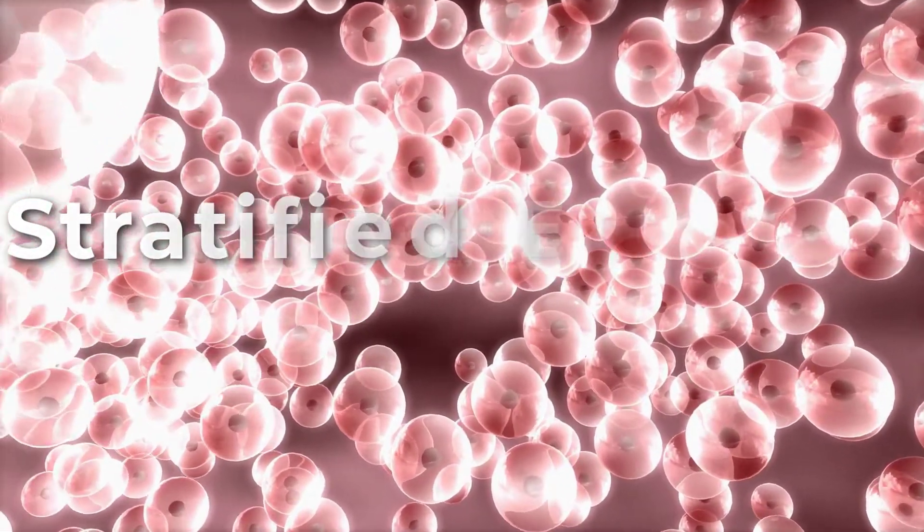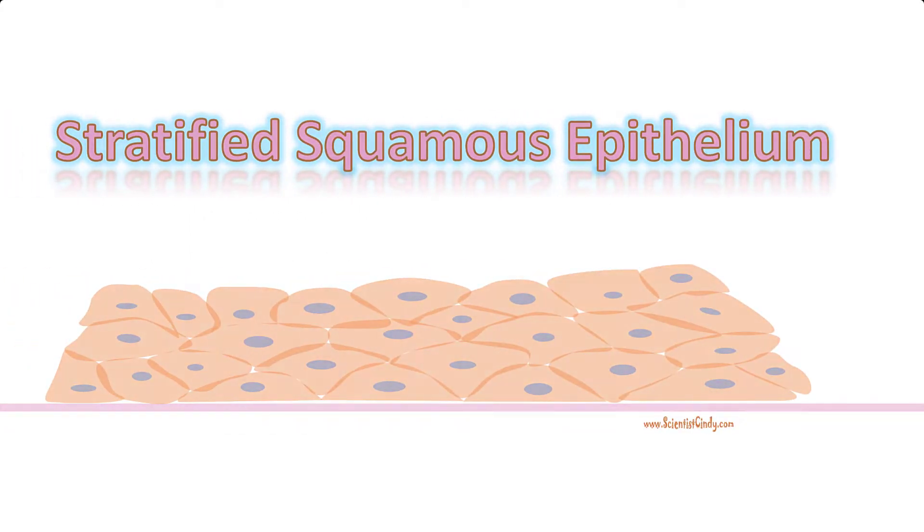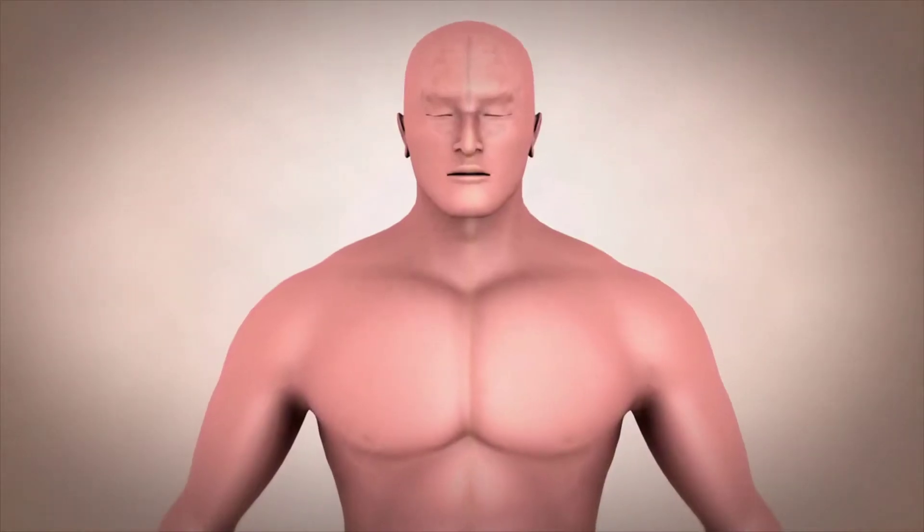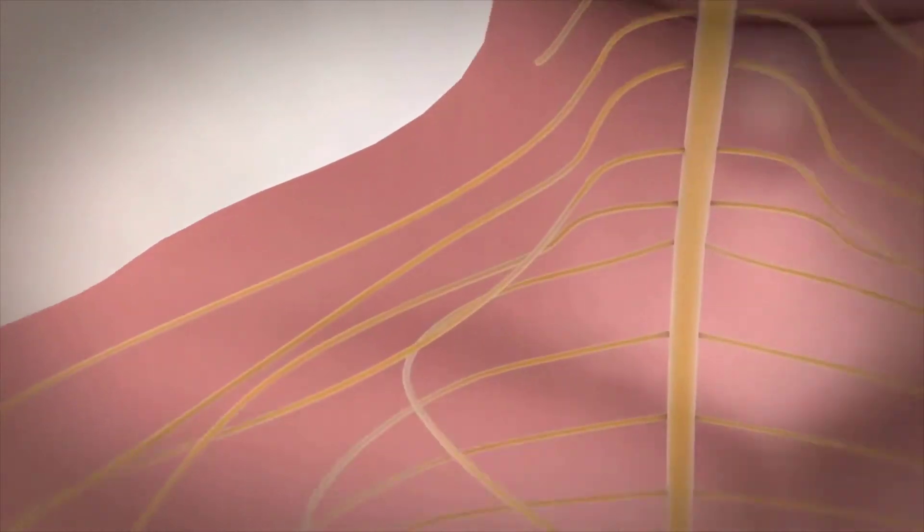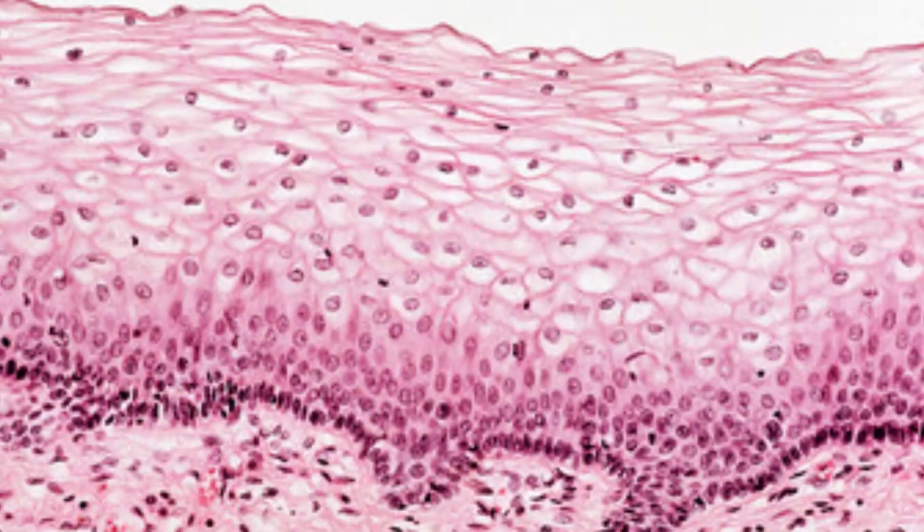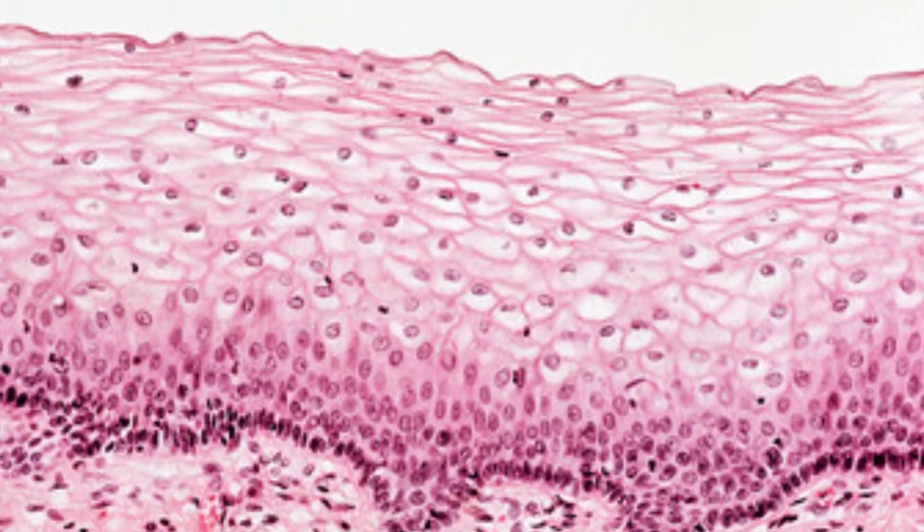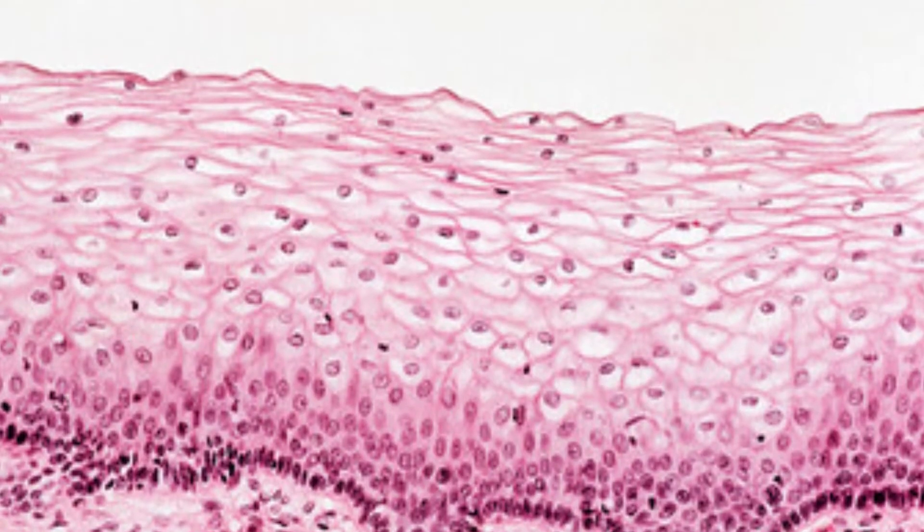Stratified epithelium. A stratified epithelium consists of several stacked layers of cells. This epithelium protects against physical and chemical wear and tear. The stratified epithelium is named by the shape of the most apical layer of cells.